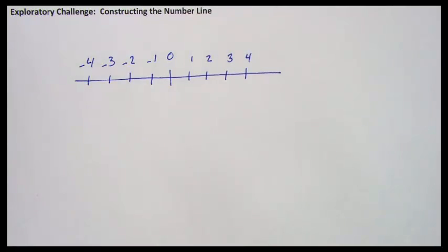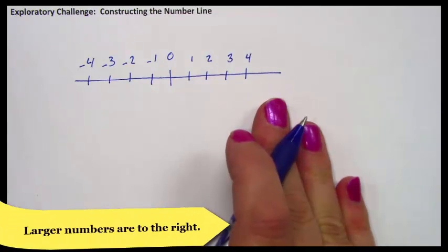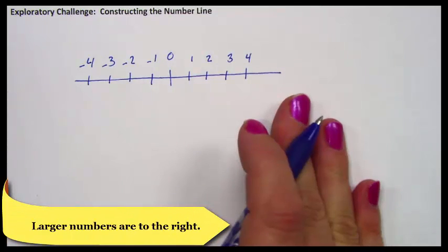Now there are some very important characteristics of a number line. The most important characteristic is that the larger numbers are to the right. As we read from left to right, the numbers get bigger.